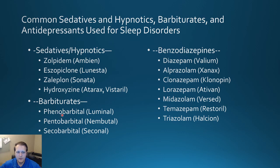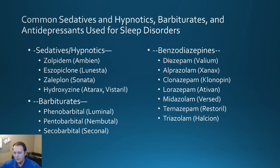Barbiturates to note include phenobarbital, which is more often used for seizures, and things like pentobarbital and secobarbital. The benzodiazepines are a very common group of drugs used both outpatient and inpatient. You have things like diazepam, which is Valium; alprazolam, which is Xanax; clonazepam; and lorazepam. Probably the most common ones used in the hospital setting, because they're available IV, include midazolam, lorazepam, and diazepam.